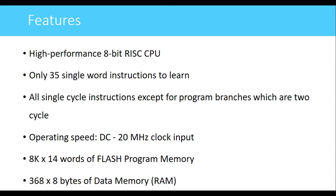The operating speed for this PIC microcontroller is from DC to 20 MHz. DC means we can operate the clock input using a switch connected to either VCC or ground — pressing the switch provides the clock and executes an instruction. 20 MHz is the maximum clock frequency that can be given as input to the PIC16F877 microcontroller.